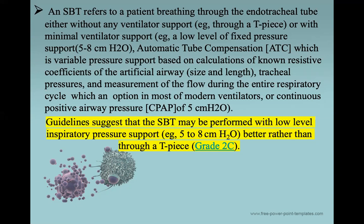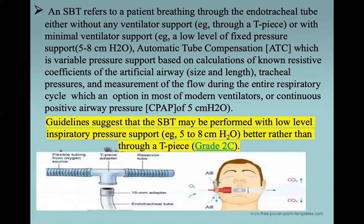A third way to perform the spontaneous breathing trial with minimal ventilatory support is by using continuous positive airway pressure (CPAP) of just 5 cm H₂O. Guidelines suggest that the spontaneous breathing trial may be performed with low-level pressure support from 5 to 8, which is even better than a T-piece. What is the T-piece? The patient is disconnected from the ventilator tubing and attached to the T-piece — shaped like the letter T — with a reservoir tube on one side and an oxygen source with a Venturi on the other side. The FiO₂ is set based on oxygen saturation requirements.